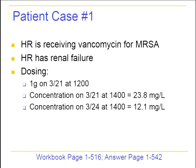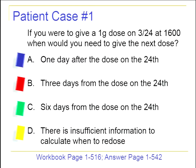Starting with patient case one — HR is currently receiving vancomycin for an MRSA infection and also has renal failure. A one gram dose is given on March 21st at noon. A concentration taken soon after comes back as 23.8, and then three days later another concentration is taken at 12.1. The question is: if you give a one gram dose on March 24th at 1600, when would you need to give the next dose? One day after, three days later, six days later, or is there insufficient information?